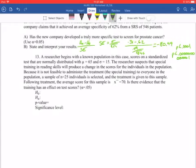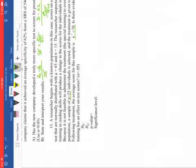For the next part, a researcher begins with a known population. In this case, scores on a standardized test that are normally distributed with a mean of 65 and standard deviation of 15. The researcher suspects that special training in reading skills will produce a change in the scores for individuals in the population. Because it's not feasible to administer the treatment, the special training to everyone in the population, a sample of 25 individuals is selected and the treatment is given to the sample. Following treatment, the average score for the sample is x-bar equals 70. Is there evidence that the training has an effect on test scores? So what we want to do is, this is how it will be very similarly set up on the exam, you're going to state your null and alternative hypothesis for this.